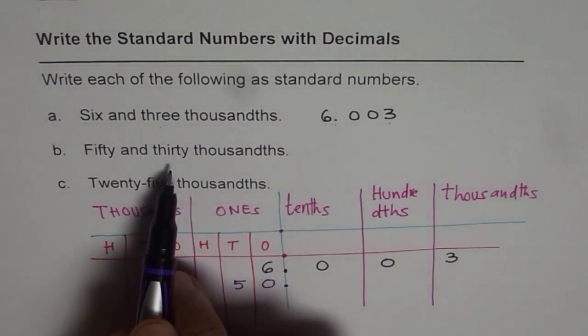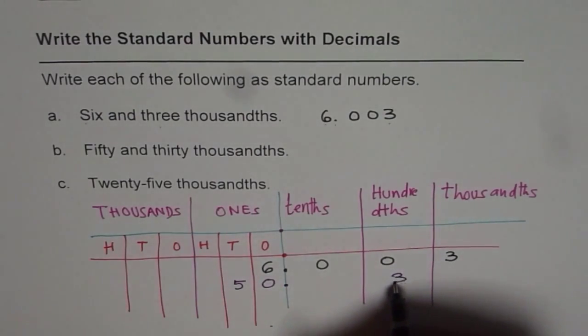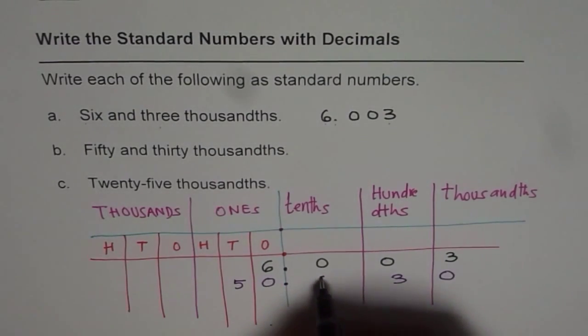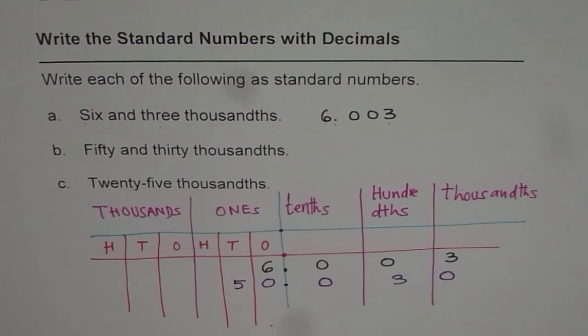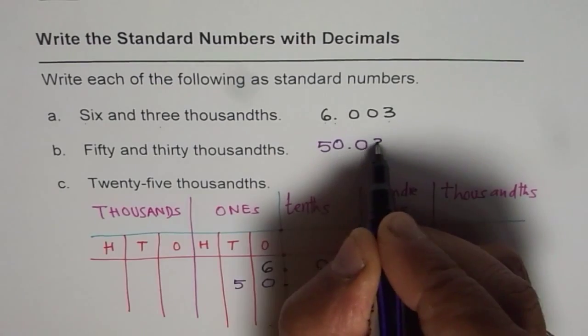Thirty thousandths. Your number has to end on thousandths, thirty. So it is thirty. Blank spaces need to be filled with zeros. So you get fifty point zero three zero.